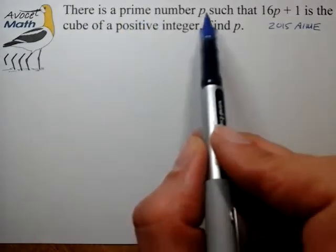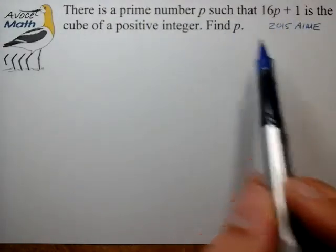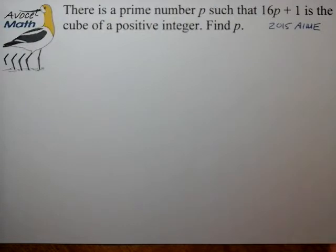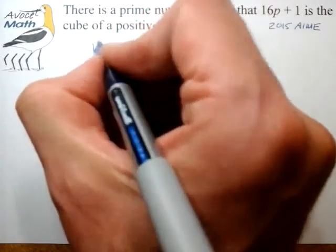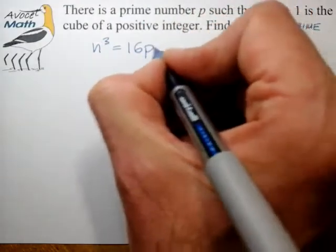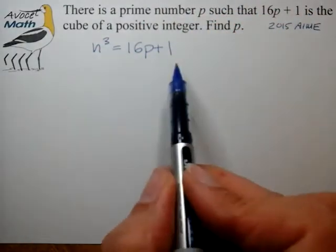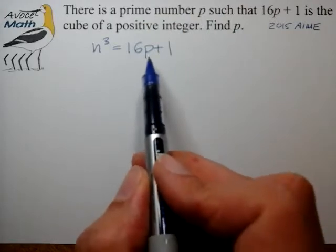There is a prime number p such that 16 times p plus 1 is the cube of a positive integer. Find the number p. So let's translate that into math terms. We have a number n such that its cube is equal to 16 times the prime number plus 1. Now in this case the problem statement tells us that this equation is in fact true and we're trying to solve for the number p.